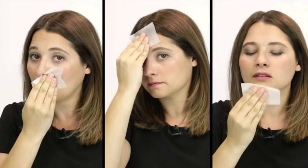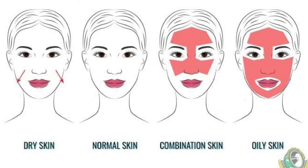You can take a tissue paper or butter paper. Place it on your face. If oil comes from the T-zone area, that is combination skin. If oil comes from everywhere, that is oily skin type.